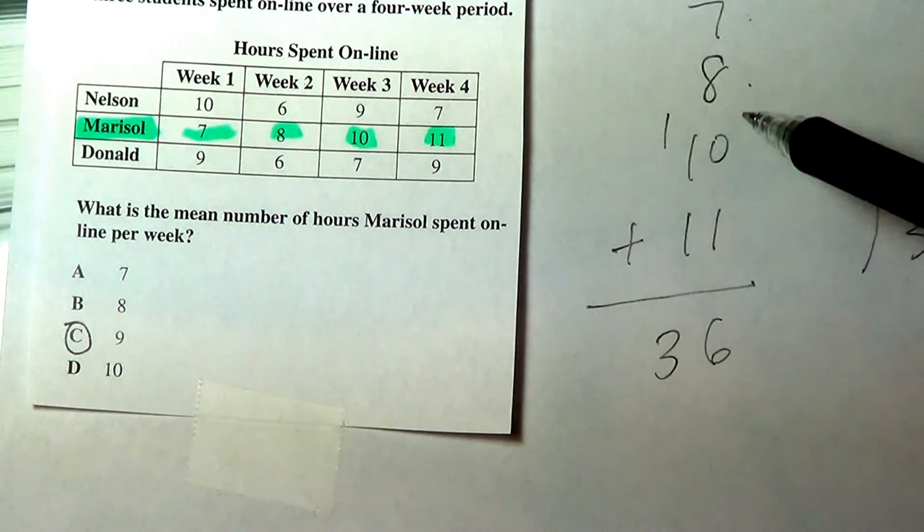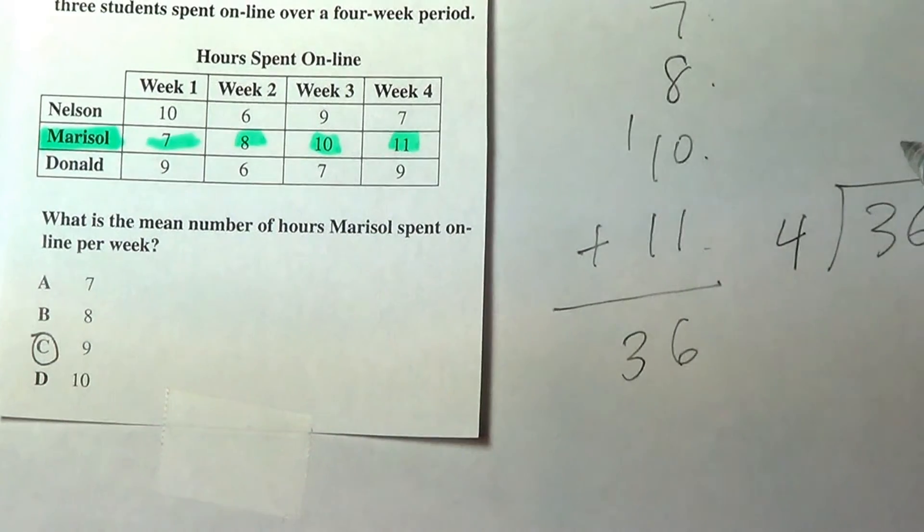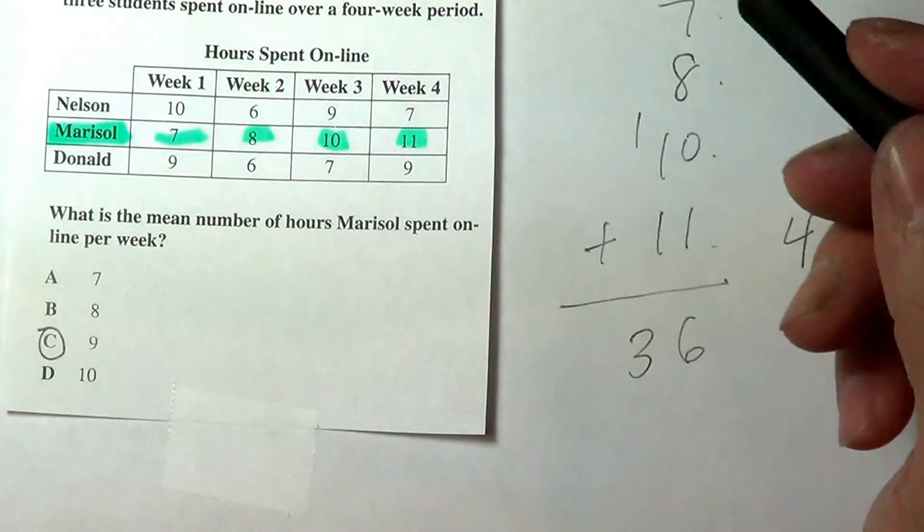So one, or number of weeks one, two, three, four, and the answer is nine. So the correct answer is 9C.